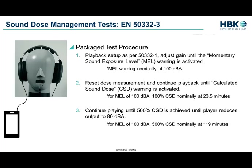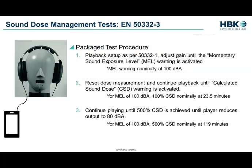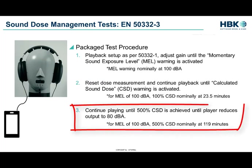The noise dose test for a packaged audio device with headphones is configured very similarly to EN 50332-1, but we execute it a little differently. We check to see that noise control warnings and automatic limit functions work according to applicable regulations. First, we need to confirm the momentary sound exposure level warning behavior — when the playback level reaches a diffuse field level of 100 dBA, the MEL warning should appear on the device. Next, we allow the calculated sound dose, or CSD, to be calculated over time. After about 23 and a half minutes at 100 dBA, we would expect the CSD to reach 100%, the daily dose limit, and raise a new warning. Once the CSD reaches 500%, after about 119 minutes at 100 dBA, the device should forcibly limit the output to 80 dB — a 20 dB reduction.